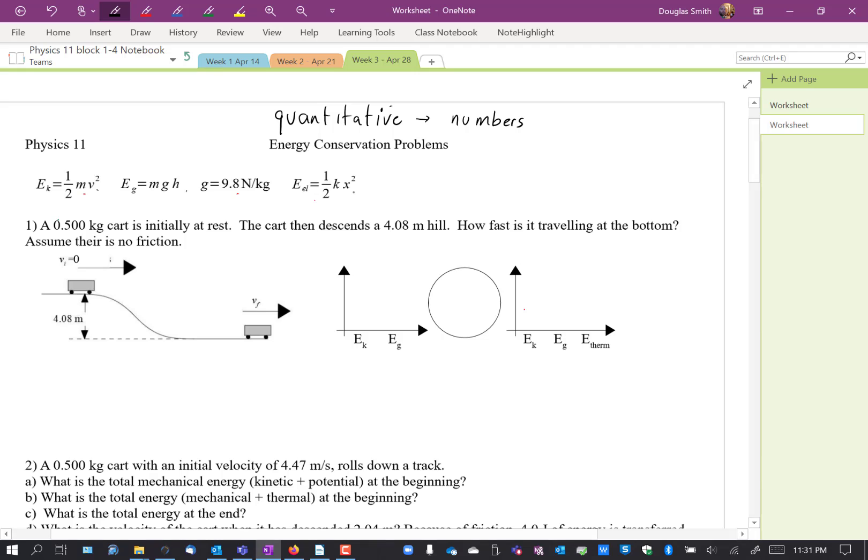Okay, so this question: there's a cart, it's at rest, it goes down a hill, how fast is it traveling at the bottom? Assume there's no friction. So I'm going to start with the LOL chart, cracks me up every time. And I'm going to say what's in the system. So we have the cart, the hill, and earth.